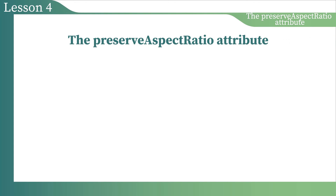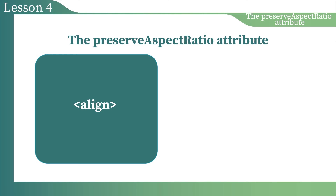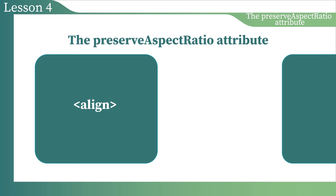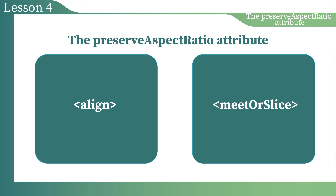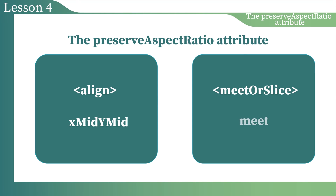The preserveAspectRatio attribute accepts two parameters. The first parameter is align, which specifies how to align the viewBox relative to the viewport. The second parameter is meet or slice — it determines whether the viewBox is fully fit inside the viewport or just partially. The default value of the align parameter is xMidYMid, and the default value of the meet or slice parameter is meet. If you omit a parameter, the default value will be applied.